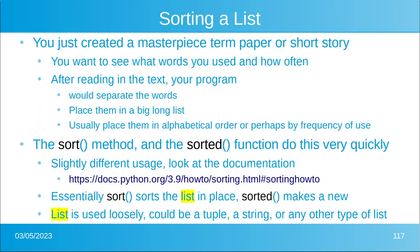Next is sorting. Suppose you just created a masterpiece — a term paper or short story — and you want to see what words you used and how often. Your program would read in the text, separate the words, place them in a big long list, and sort them alphabetically or by frequency of use. There are two methods: the sort method and the sorted function, and they both work very quickly. The big difference is that sort sorts the list in place, while sorted makes a new list.